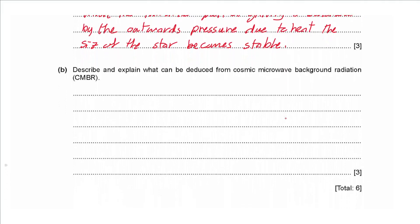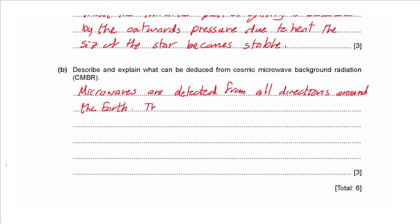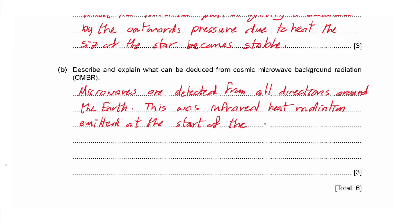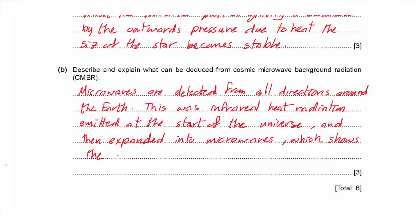Part b: describe and explain what can be deduced from cosmic microwave background radiation (CMBR). Microwaves are received from all directions around the Earth. This was originally infrared heat radiation emitted at the start of the universe, which has since expanded into microwaves — showing that the universe is expanding, as increasing wavelength indicates increasing space.